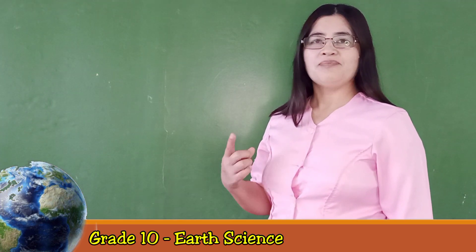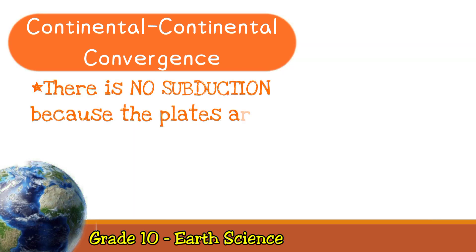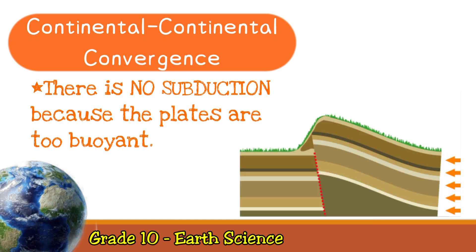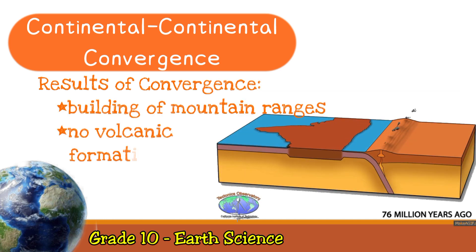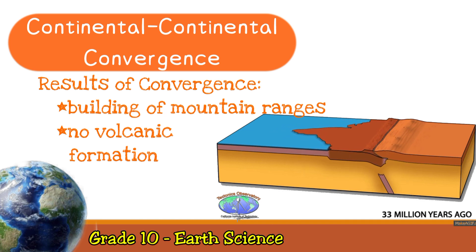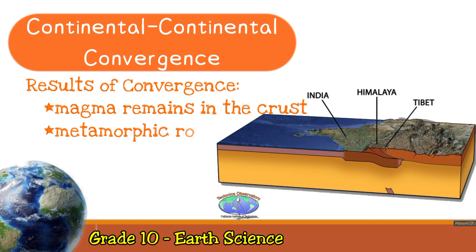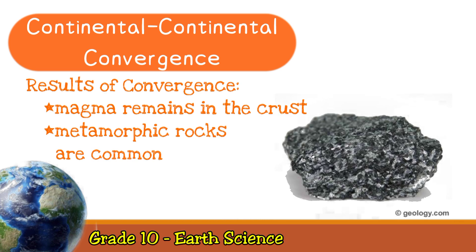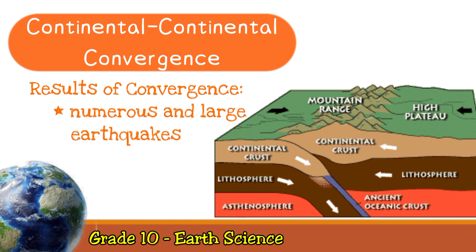Finally, there is no subduction in the convergence of two continental plates, since both plates are too buoyant to subduct. Since the crust has nowhere to go but upward, this creates some of the world's largest mountain ranges. Magma cannot penetrate the thick crust, so there are no volcanoes, although magma remains in the crust. Metamorphic rocks are common because of the stress the continental crust experiences. With enormous slabs of crust smashing together, continent-continent collisions produce numerous and large earthquakes.